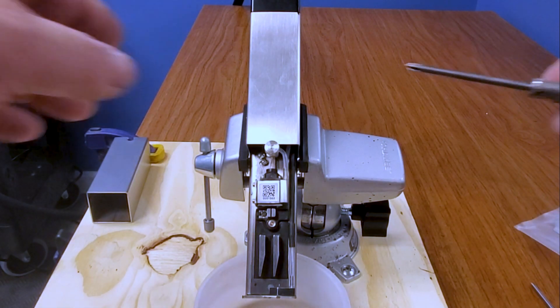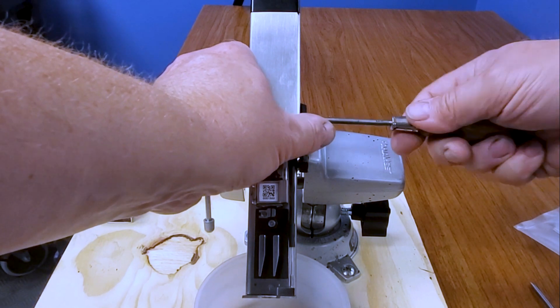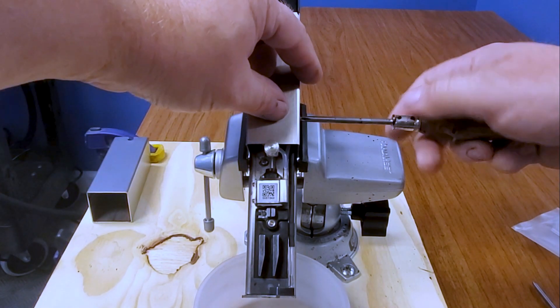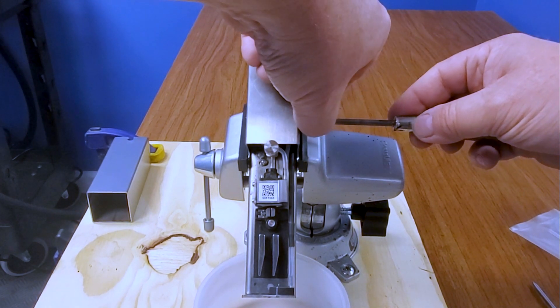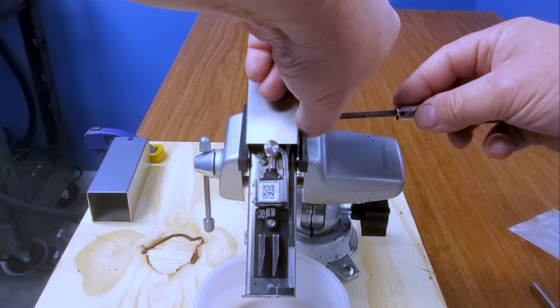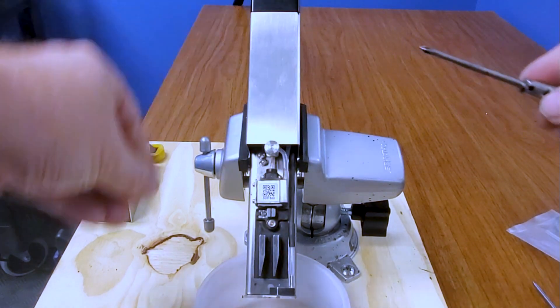So with our printhead in a vise, we're going to remove the four screws holding the upper sleeve or cover to our printhead so we can expose the part we're going to be replacing, the gutter detect.